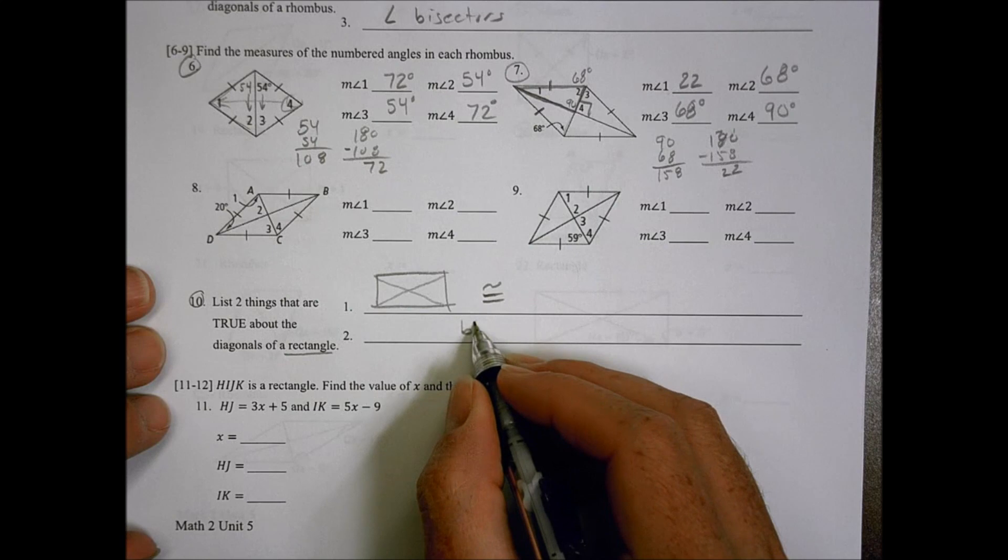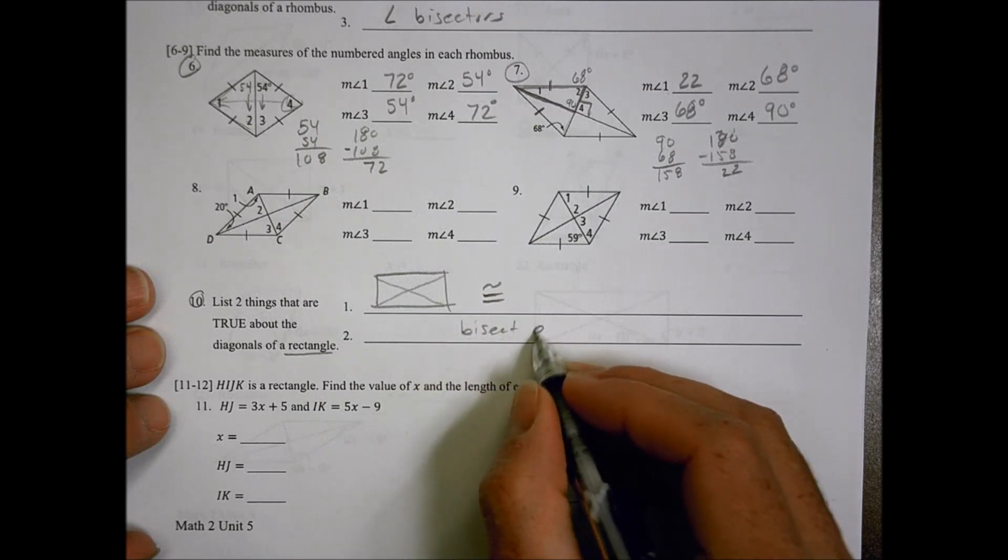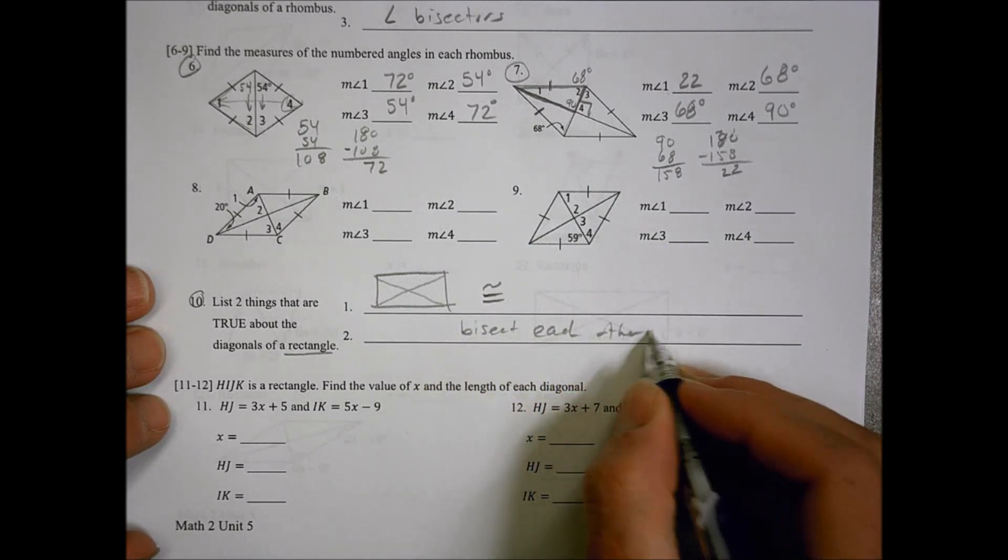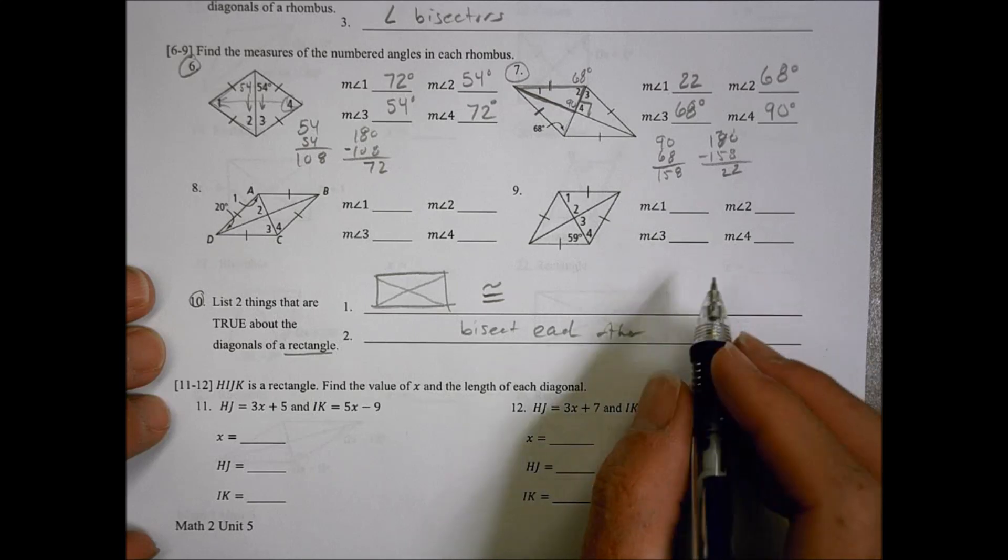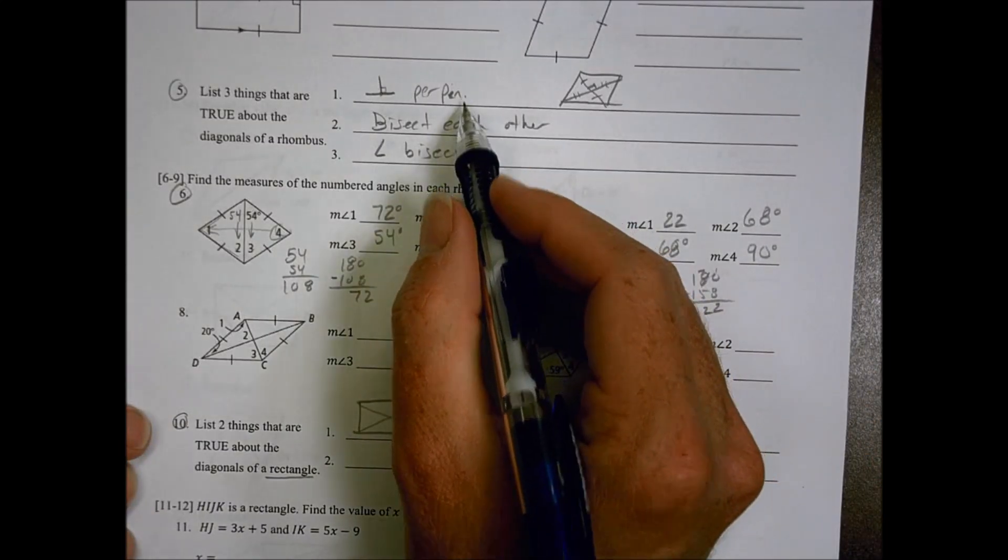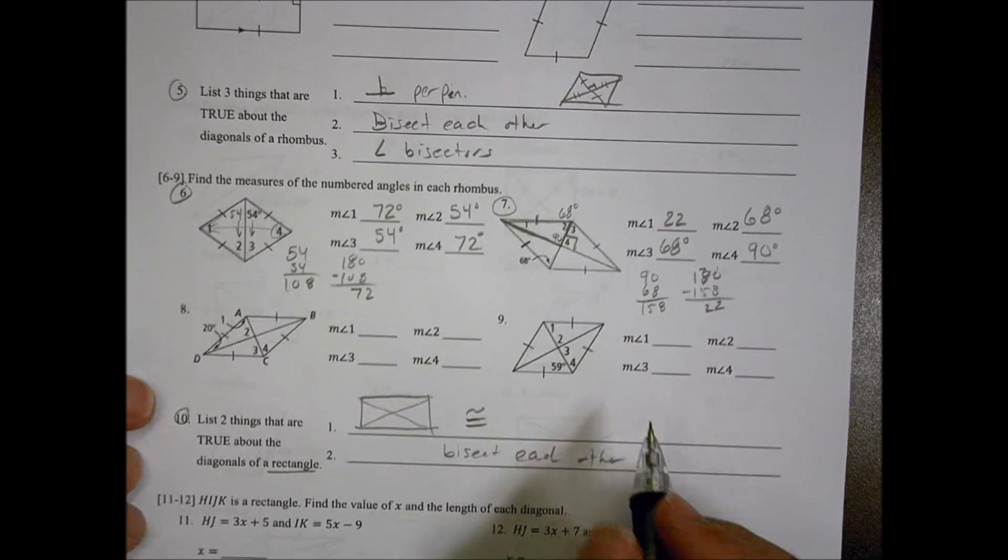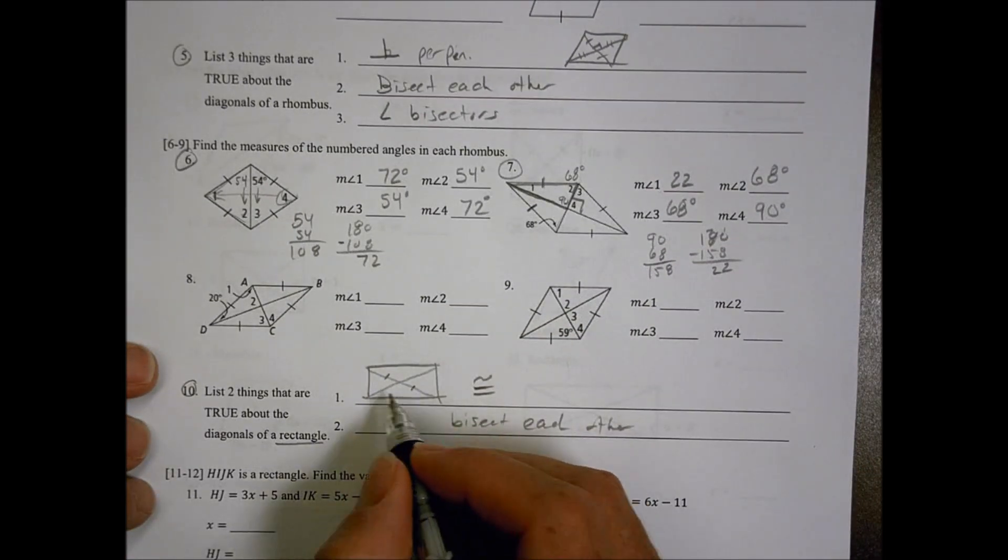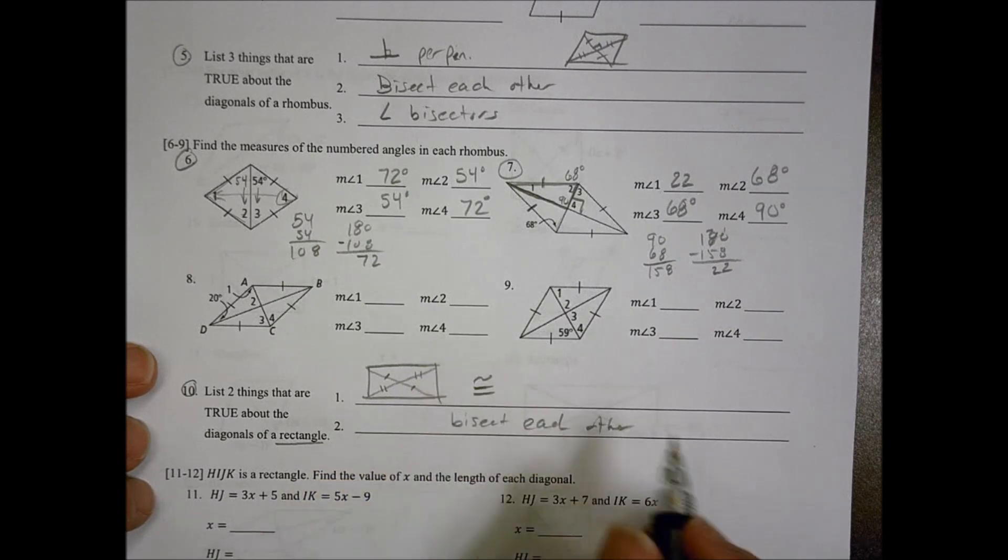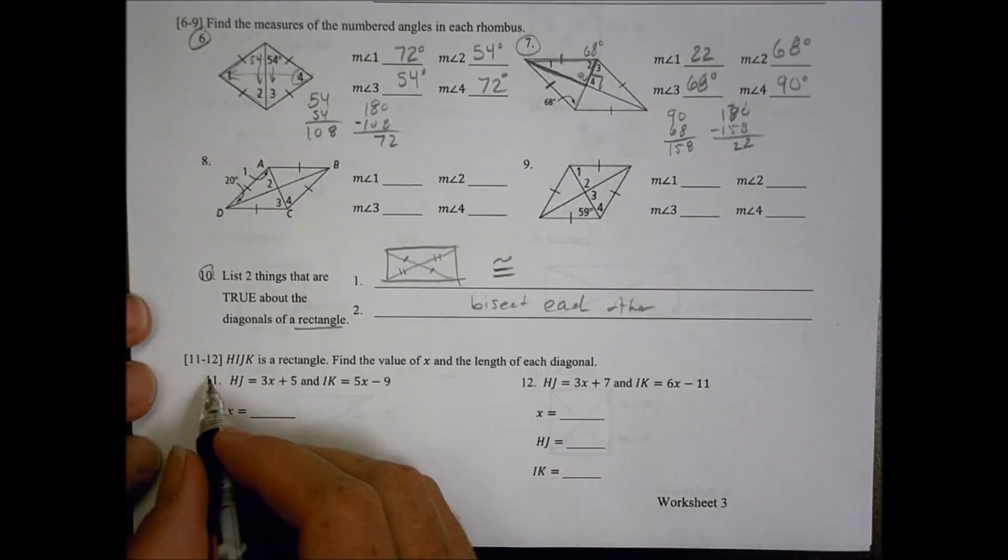The second thing we would say, like a rhombus, is they bisect each other. So what we're not saying is we're not saying they're perpendicular, and we're not saying it's an angle bisector. The only thing that's similar is that they bisect each other, meaning that matches that, and that matches that. So let's use that information to answer number 11.